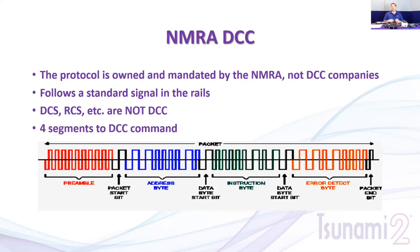The DCC system will continue to repeat this cycle. This is important to know because we're going to be talking about programming and doing CV adjustments on the main line. When we look at the DCC signal for programming, the command would be: 'Hey everybody, listen up — Locomotive 1000, set CV 128 to a value of 100, end of transmission.' The decoder, having received all of that, performs the task.